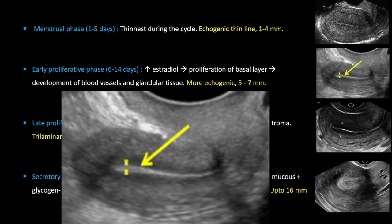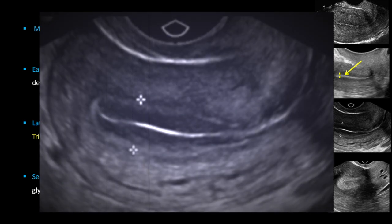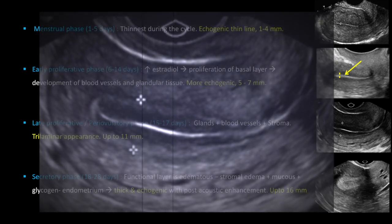The early proliferative phase lasts from day six to fourteen. During this period there is increased hormonal influence, causing proliferation of the basal layer and development of blood vessels and glandular tissue, so the endometrium appears more echogenic and measures five to seven millimeters. The late proliferative or periovulatory phase lasts from day fifteen to seventeen; glands, blood vessels, and stroma increase, giving a trilaminar appearance, and the endometrium can measure up to eleven millimeters.